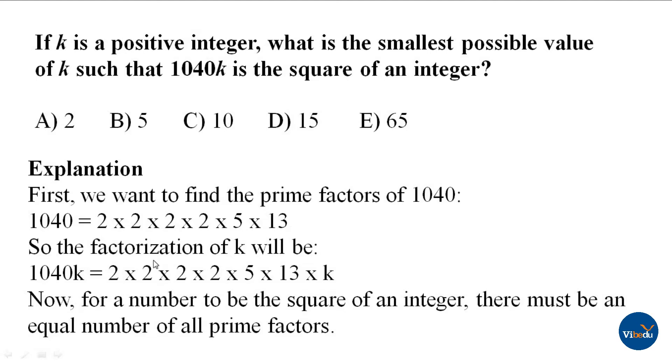So the factorization of k will be 1040k = 2 × 2 × 2 × 2 × 5 × 13 × k.